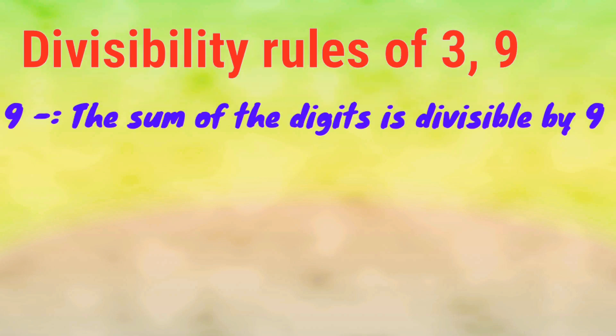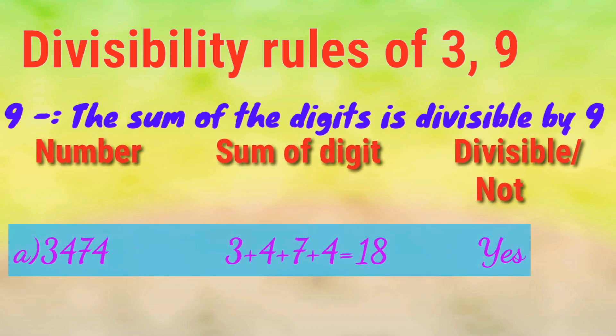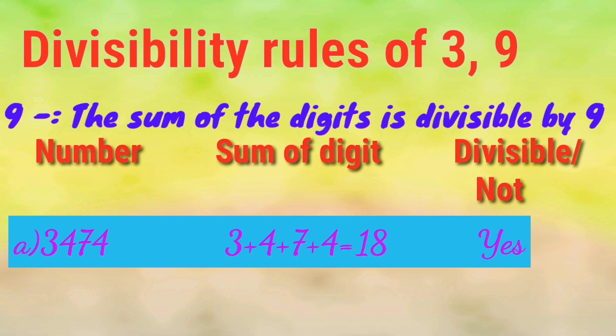Number 2: Divisibility rule of 9. The divisibility rule of 9 is the same as the rule of 3 — the sum of all digits must be divisible by 9. For example, 3474. The sum of all digits is 3+4=7, 7+7=14, 14+4=18. 18 comes in the table of 9, so the whole number is divisible by 9.